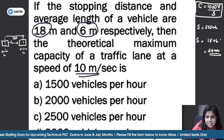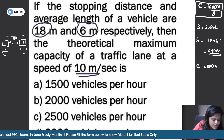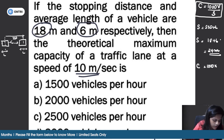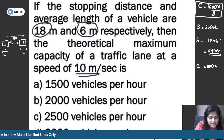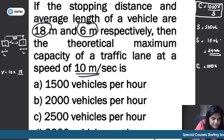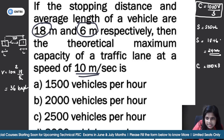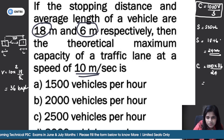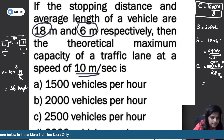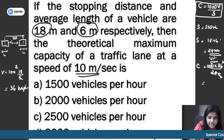The capacity C = 1000s × v. Speed v = 10 m/s converts to 10×18/5 = 36 km/h. Using C = 1000/s × v in appropriate units, the answer works out. The correct answer is option A: 1500 vehicles per hour.